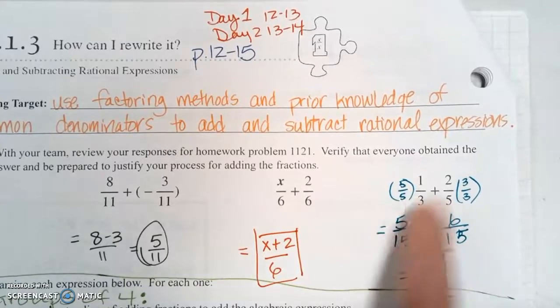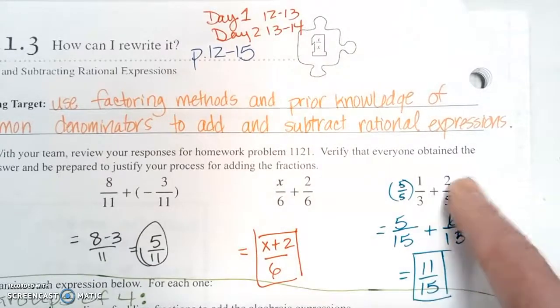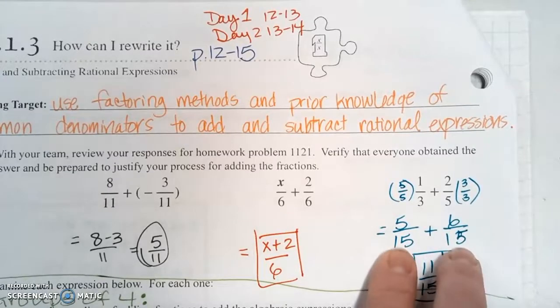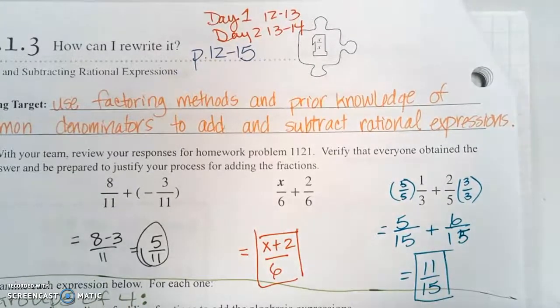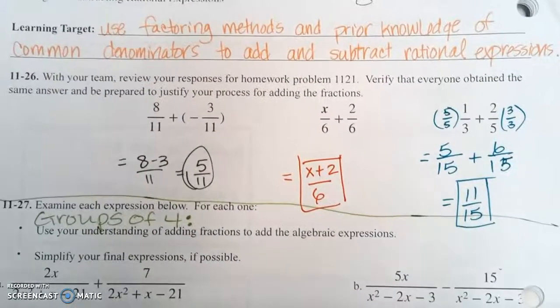So 5 times 1 is 5, 5 times 3 is 15. And then on the second expression, 2 times 3 is 6 and 5 times 3 is 15. Now we have two common denominators and we can add or subtract: 5 plus 6 is 11 over that common denominator of 15.